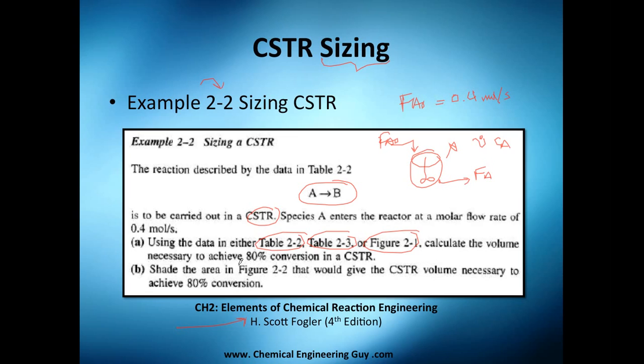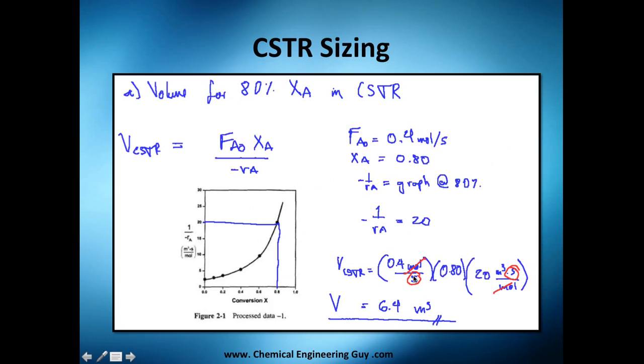Calculate the volume necessary to achieve 80% conversion in that CSTR. That's letter A. Letter B will be essentially just shade the area in figure 2-2 that will give the CSTR a volume necessary to achieve that 80% conversion. So essentially calculate the volume and shade it in a graph.